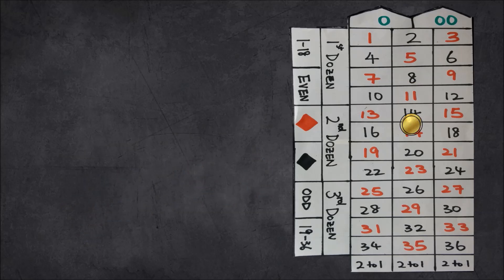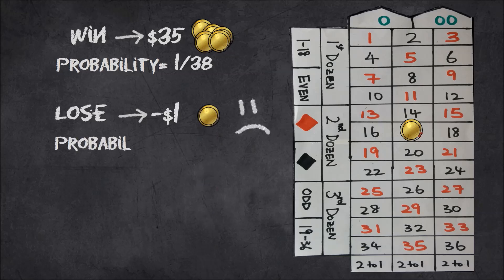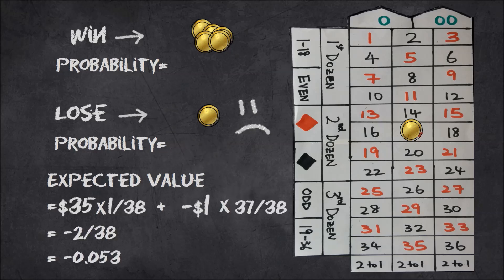So, for example, say we only bet a dollar on a single number. If we win, we get $35, and the probability of that is 1 in 38. Now, if we lose, we only lose a dollar, but the probability is a lot higher now, it's 37 out of 38. So the expected winnings per bet is the weighted total. It's what you will win times the probability of winning, plus what you will lose times the probability of losing. It turns out to be minus 2 out of 38, which is minus 0.05. So in the long run, we expect to lose on average 5 cents per bet.